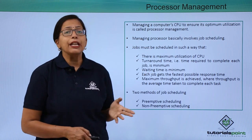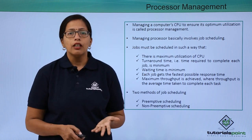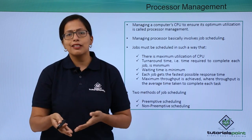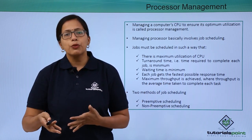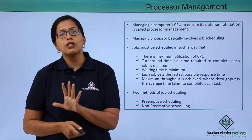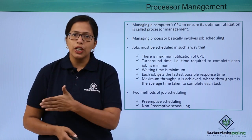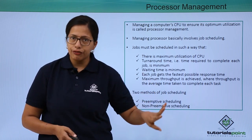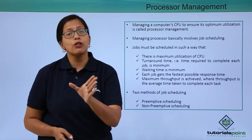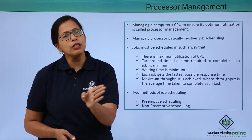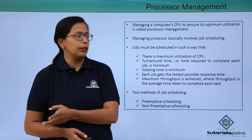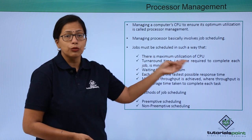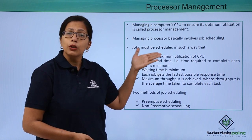Managing the processor basically involves job scheduling. The function of the processor is carrying out different tasks. There are multiple tasks waiting to be done by the processor. The operating system sees to it how these jobs are to be scheduled, so that the important ones get done first. But it's not that just because a job is unimportant, it has to keep waiting for a long time. Maximum utilization of the CPU has to be ensured while doing the scheduling.